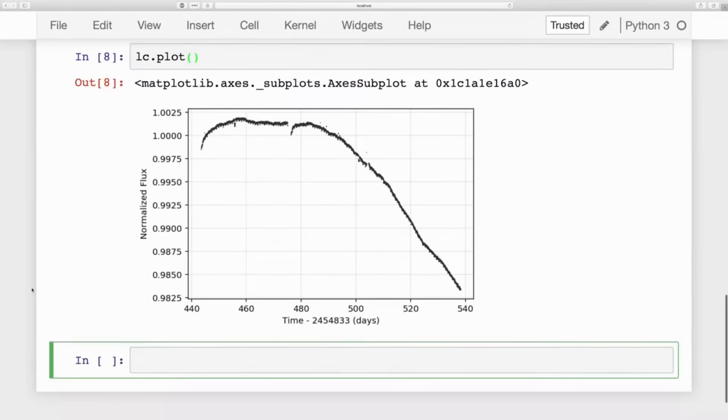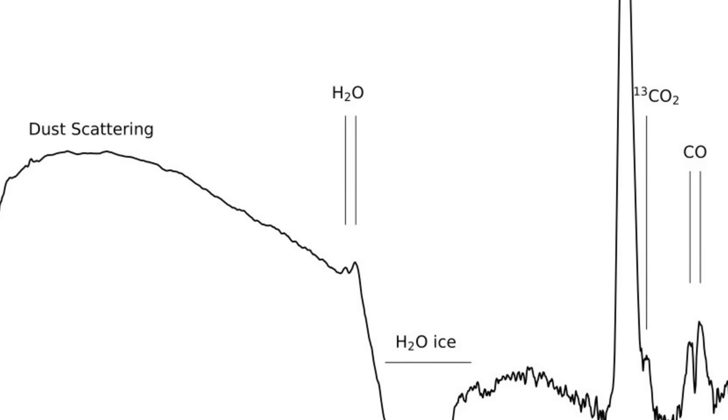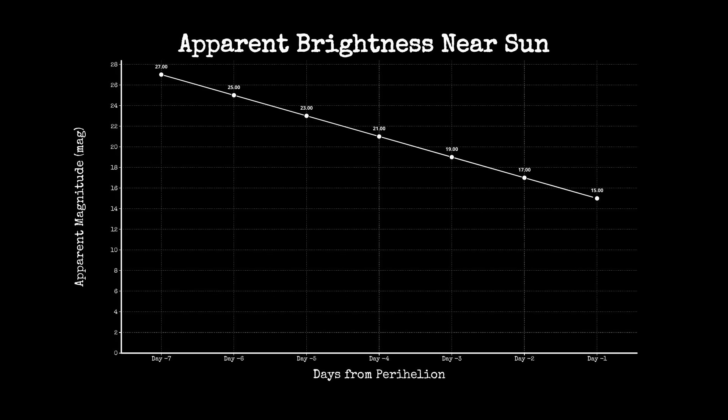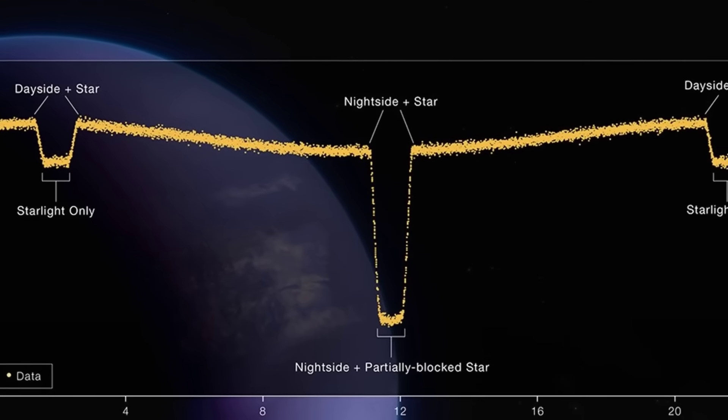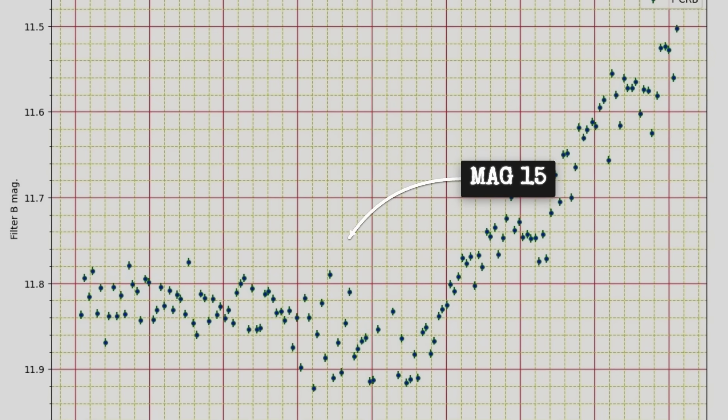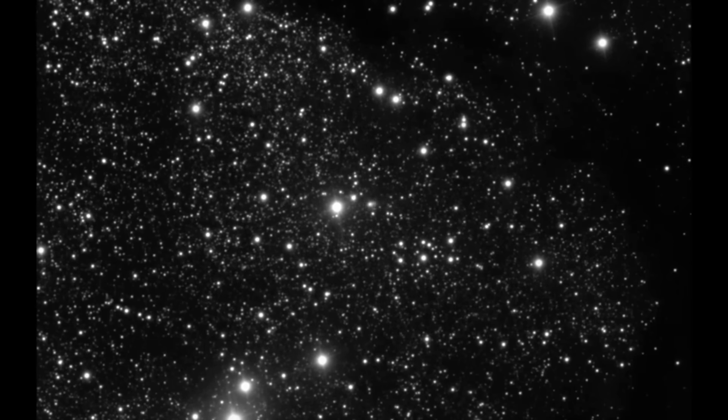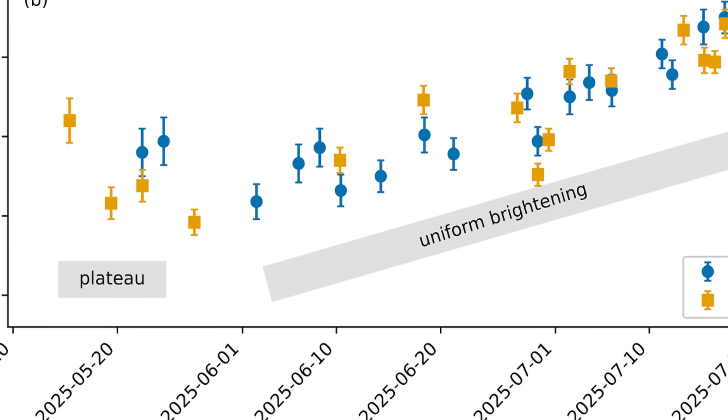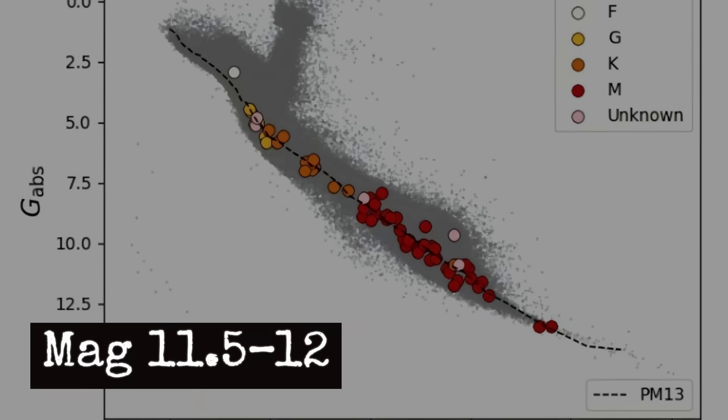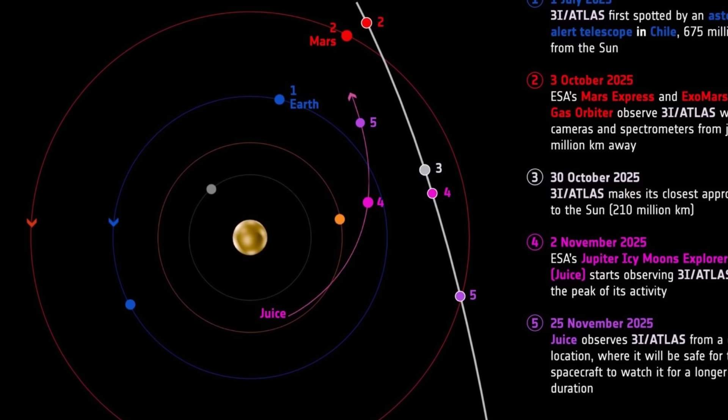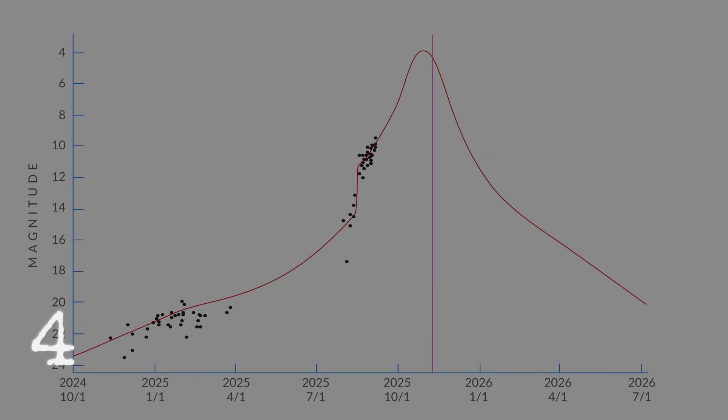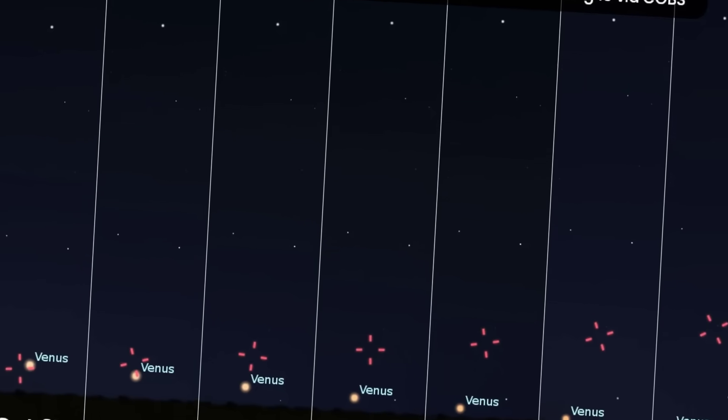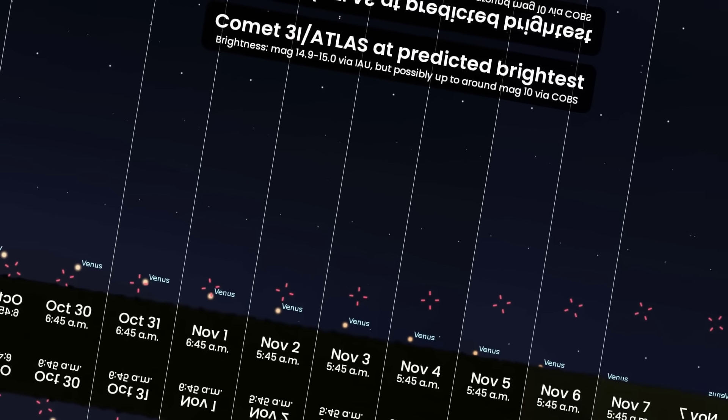Now, if we look at the light curve data from the COBS database, we can see something fascinating. This graph shows apparent magnitude on the vertical axis. Remember, lower numbers mean brighter objects, and time on the horizontal axis. We see the first measurements in July at around magnitude 15, which requires a fairly powerful telescope to observe. You'll notice it began brightening steadily as it approached, reaching approximately magnitude 11.5 to 12 before we lost visual contact in early October. That's an increase of about 3 to 4 magnitudes, which means it became roughly 25 to 40 times brighter than when first discovered.